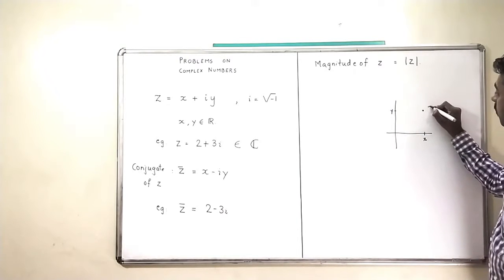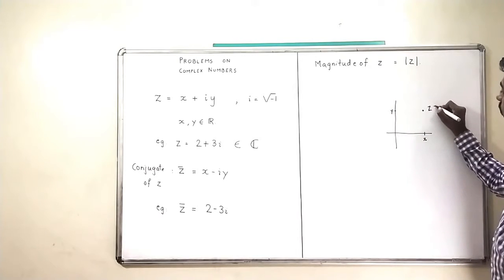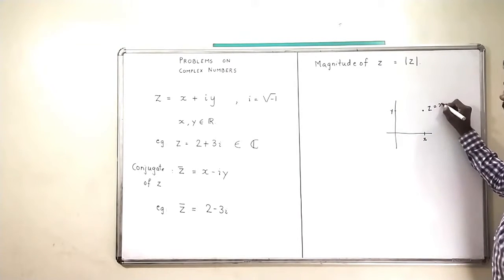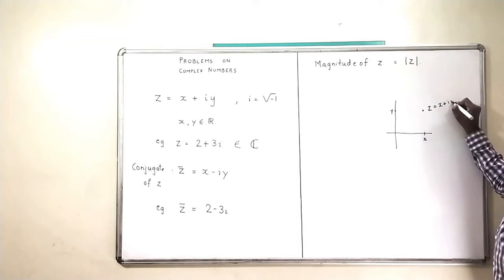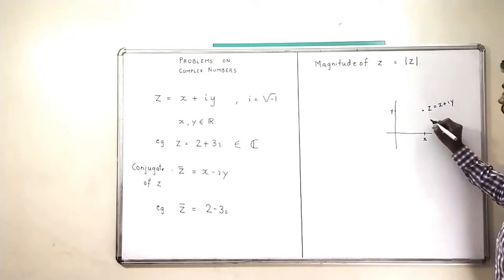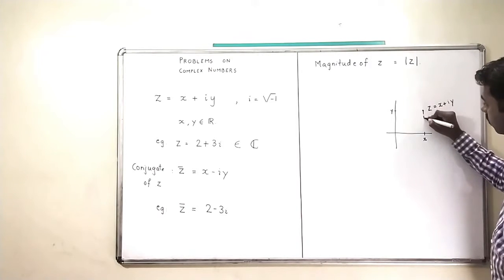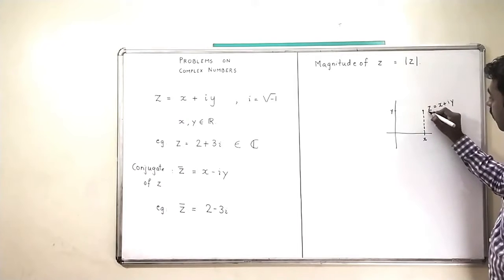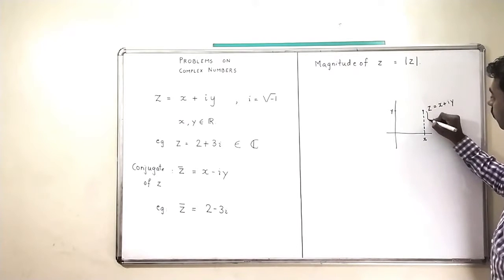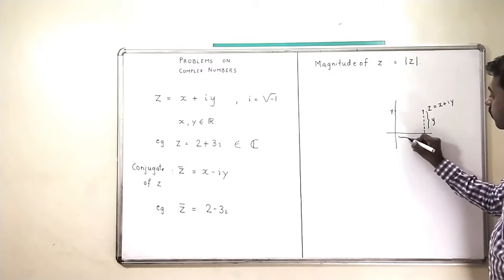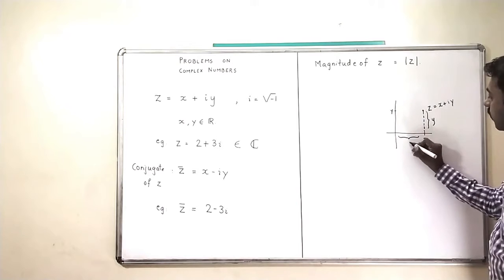So this complex number, we are going to denote by X plus iY. This length is Y units, and this length is X units.